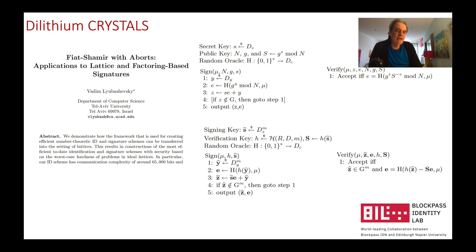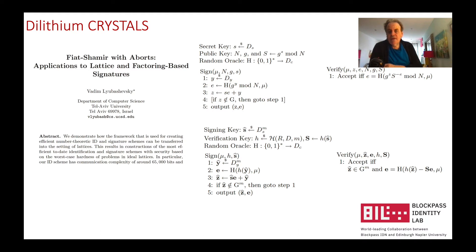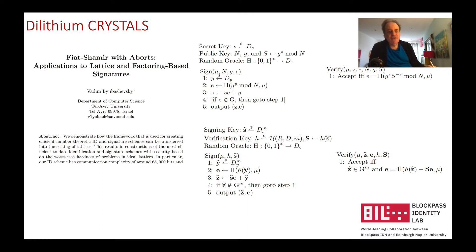One contender is CRYSTALS-Dilithium, which has a good track record using standard methods that have been around for quite a while. It uses lattice methods, which represent points in space using polynomial values — not in RSA form or elliptic curve form. For digital signatures, CRYSTALS-Dilithium uses the Fiat-Shamir method, and here is that method using lattices.